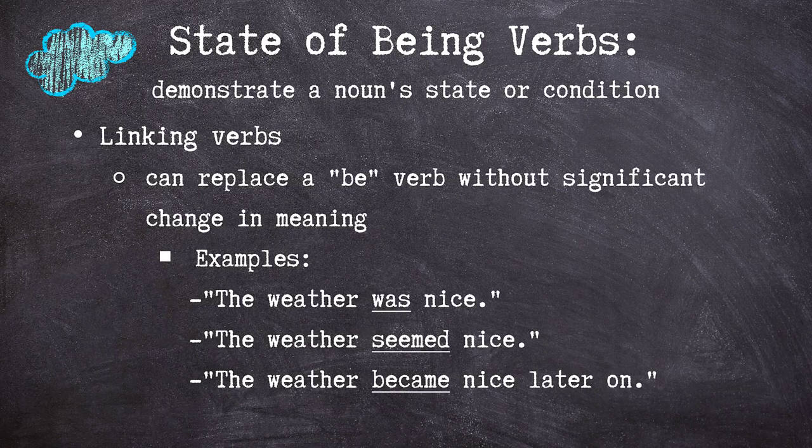Linking verbs are also considered state of being verbs. These verbs can replace any be verb without significantly changing the meaning of a sentence. Our example sentences all have a similar meaning but use different linking verbs: The weather was nice. The weather seemed nice. The weather became nice later on. The be verb 'was' in our first sentence is replaced by 'seemed' and 'became,' both of which are linking verbs that create the same essential meaning.